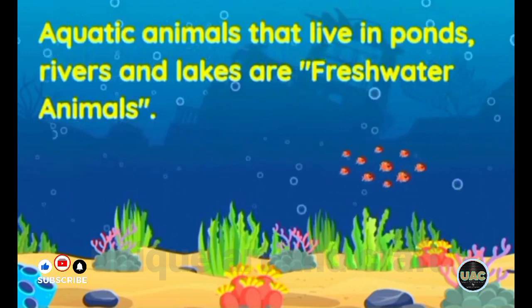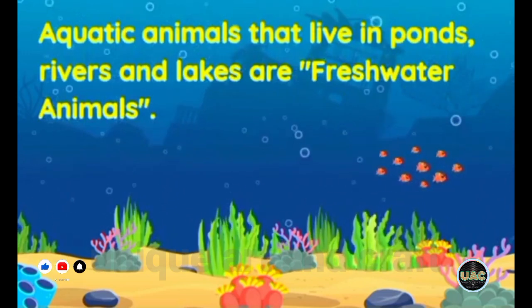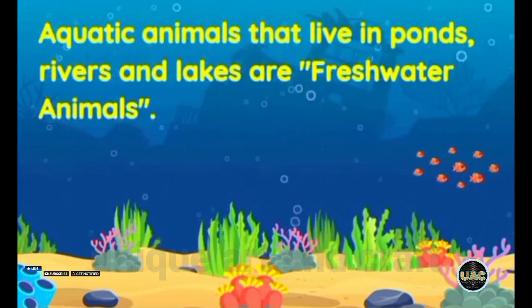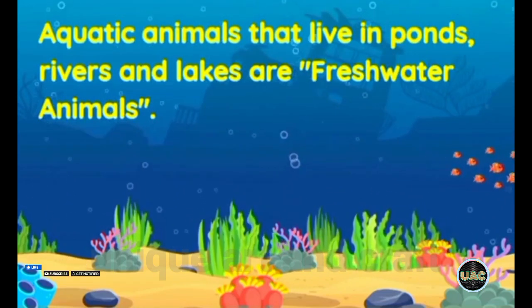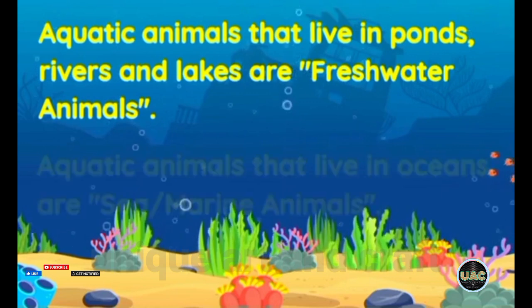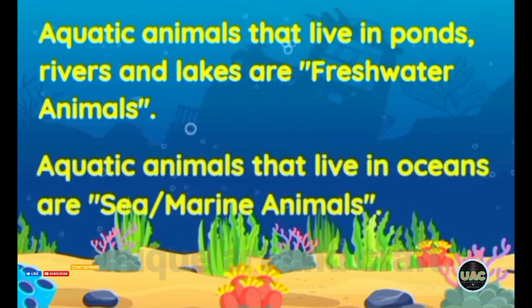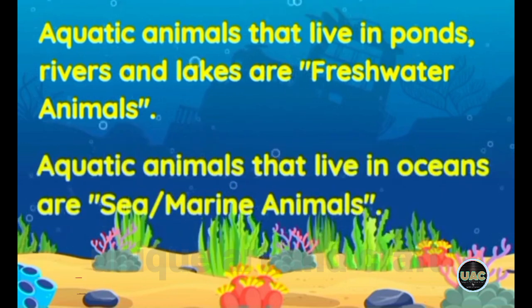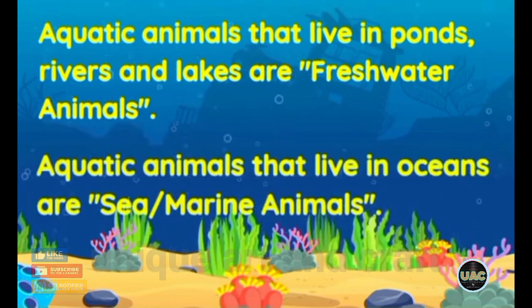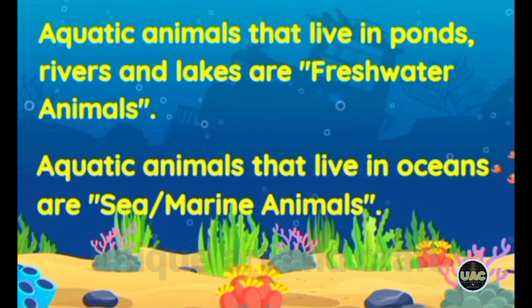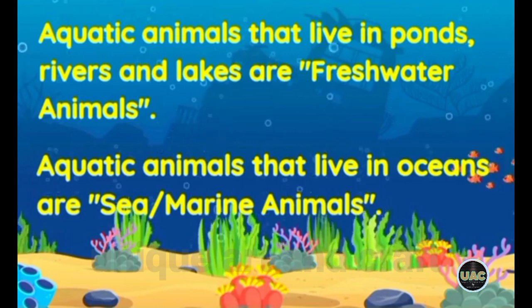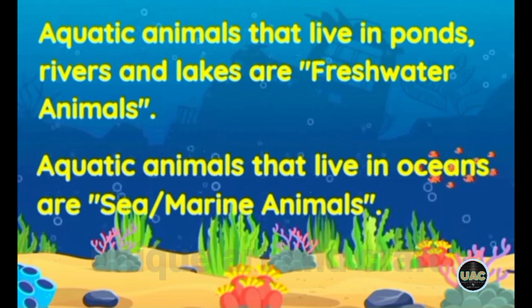Aquatic animals that live in pond, river and lakes are freshwater animals. While aquatic animals that live in ocean are called sea or marine animals.